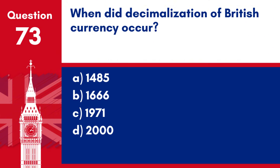Question 73. When did decimalisation of British currency occur? a. 1485. b. 1666. c. 1971. d. 2000.